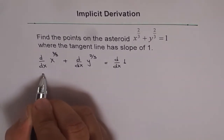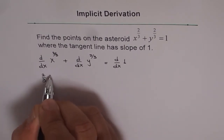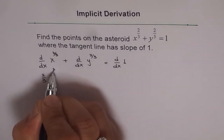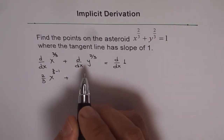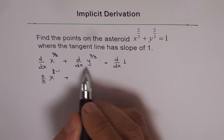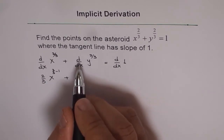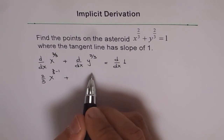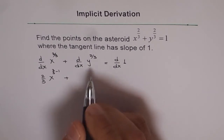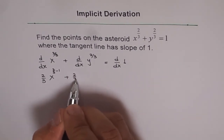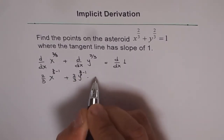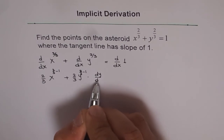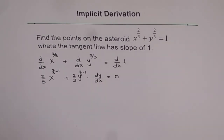This derivative is two over three times x to the power of two over three minus one. Plus, when we take the derivative of y to the power of two over three, we apply the chain rule: d/dy of y to the power of two over three times dy/dx. So we get two over three times y to the power of two over three minus one, times dy/dx, equals zero — the derivative of a constant is always zero.